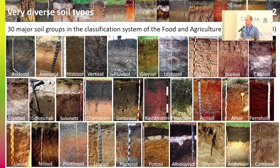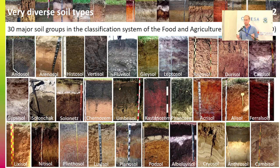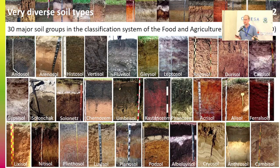When we talk about soils, we are talking about a huge diversity. FAO has defined 30 major soil types, but there are many more subgroups. You can see different colors and different horizons. Of course, all these soils have very different properties and characteristics. Some are suitable for agriculture and others are not at all.